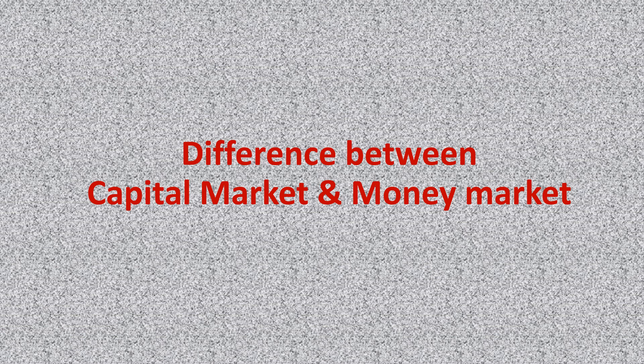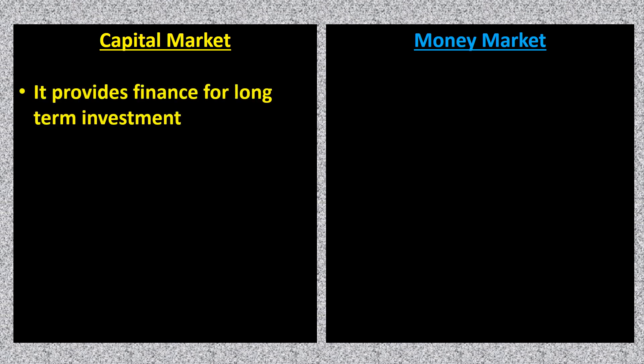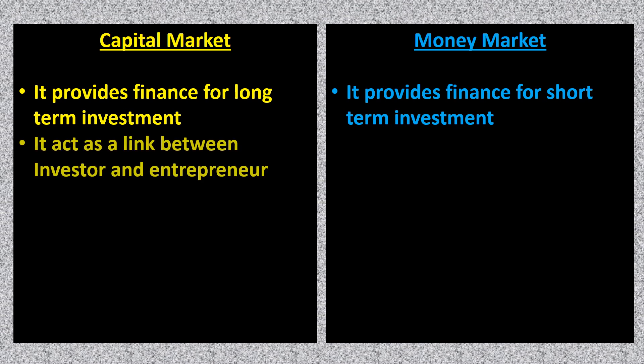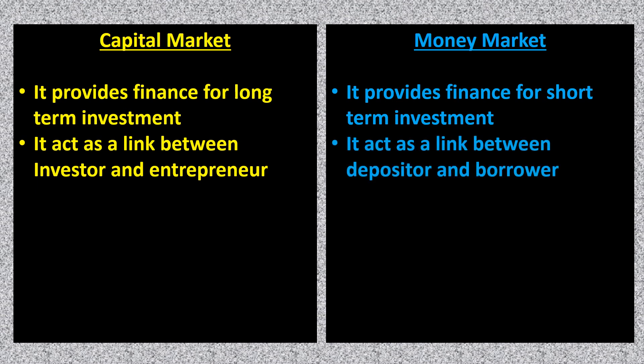Next, let us discuss the difference between the capital market and the money market, which is very important. The first difference is that the capital market provides finance for the long term — for a period exceeding one year — while the money market provides funds for only a short period, which is less than one year. Additionally, the capital market is a link between investors and entrepreneurs, while the money market acts as a link between depositors and borrowers.